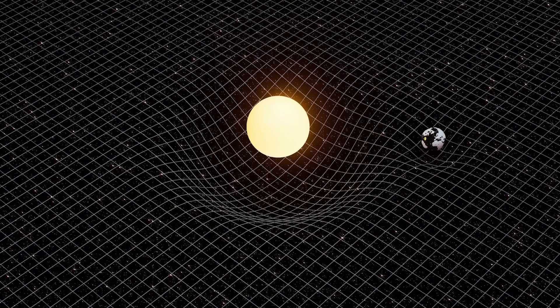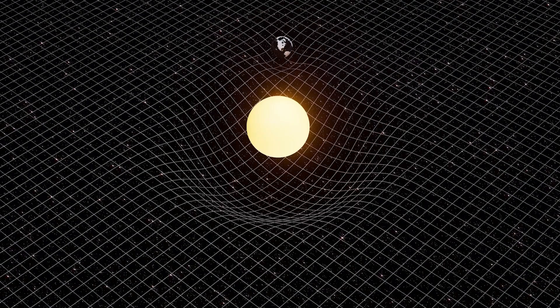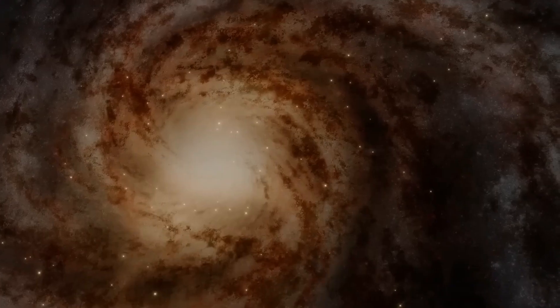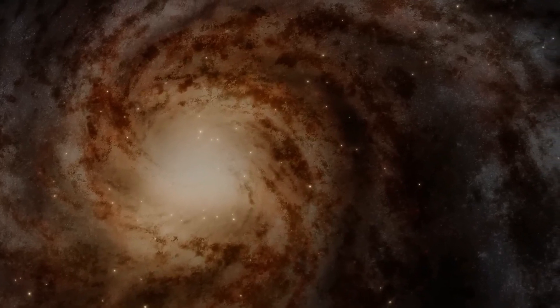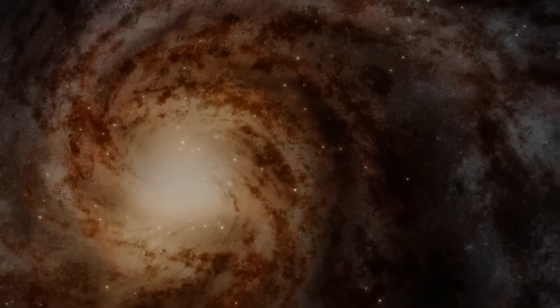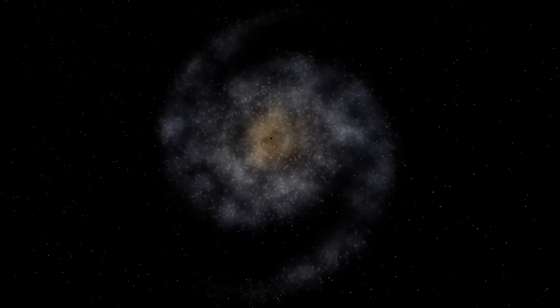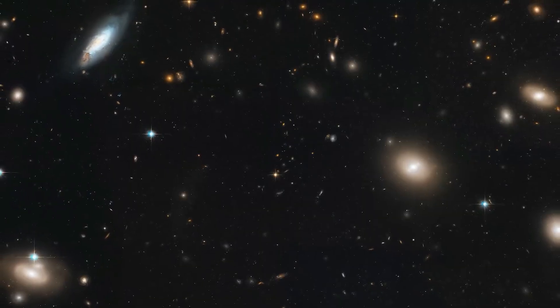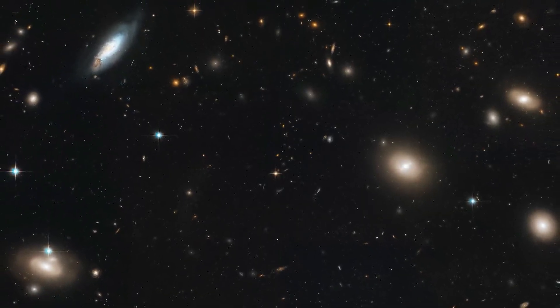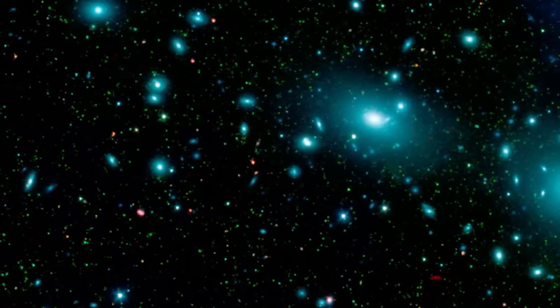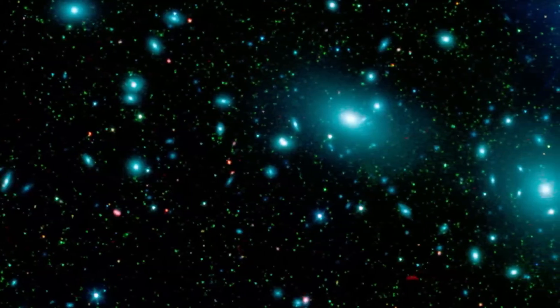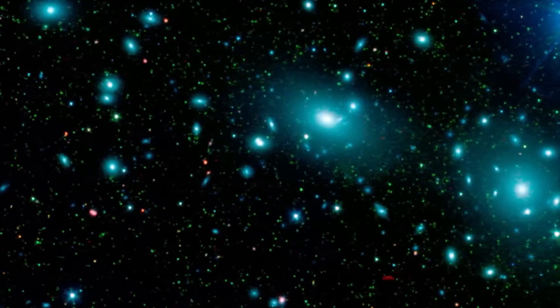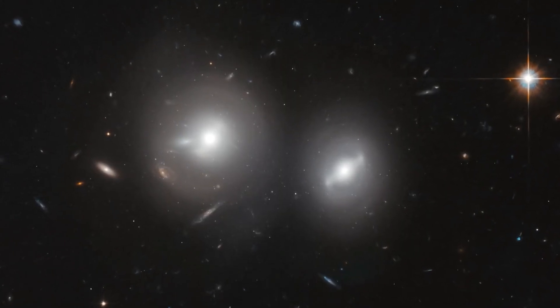A galaxy rotation curve illustrates the orbital speeds of visible stars or gas in the galaxy relative to their radial distance from the center. In our solar system, the rotation curve shows a pattern where the average rotational velocity of planets decreases as their average distance from the sun increases. Essentially, planets farther from the sun move at a slower pace, following an inverse relationship with the square root of their radial distance.